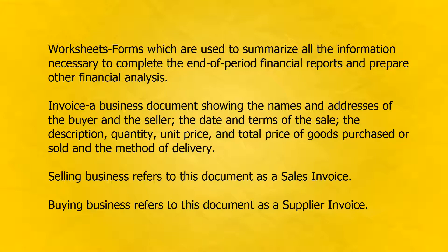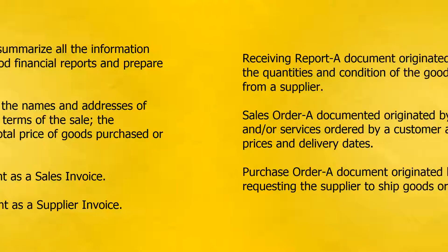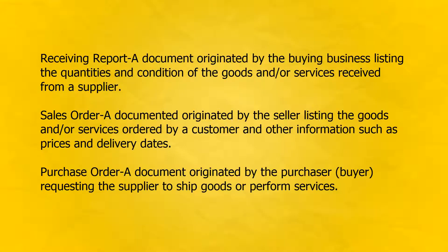The selling business refers to this document as a sales invoice. The buying business refers to this document as a supplier invoice. Receiving report: a document originated by the buying business listing the quantities and condition of the goods and/or services received from a supplier.